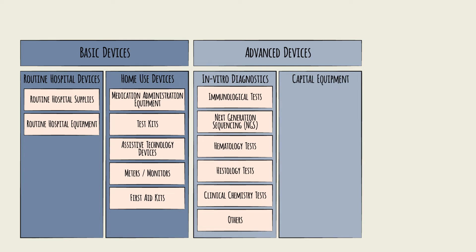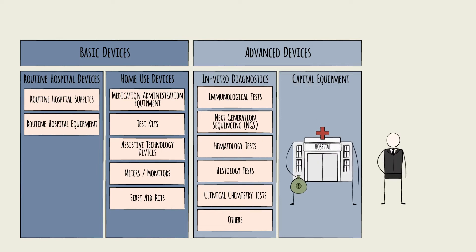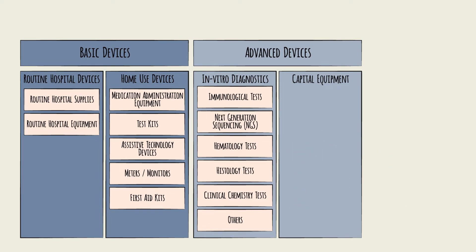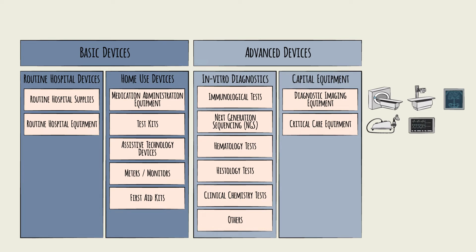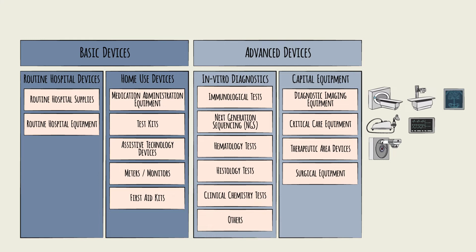Capital equipment are high investment items that cost hospitals hundreds of thousands to millions of dollars. As these are significant investments, some are purchased through long negotiation cycles with manufacturers that can last over a year. Most capital equipment are large, durable items that hospitals use for years, like diagnostic imaging equipment such as MRI machines, CT and x-ray scanners used to create detailed images of organs and tissues, critical care equipment like ventilators to help patients breathe, and ECG machines for monitoring patients' heart rhythms.